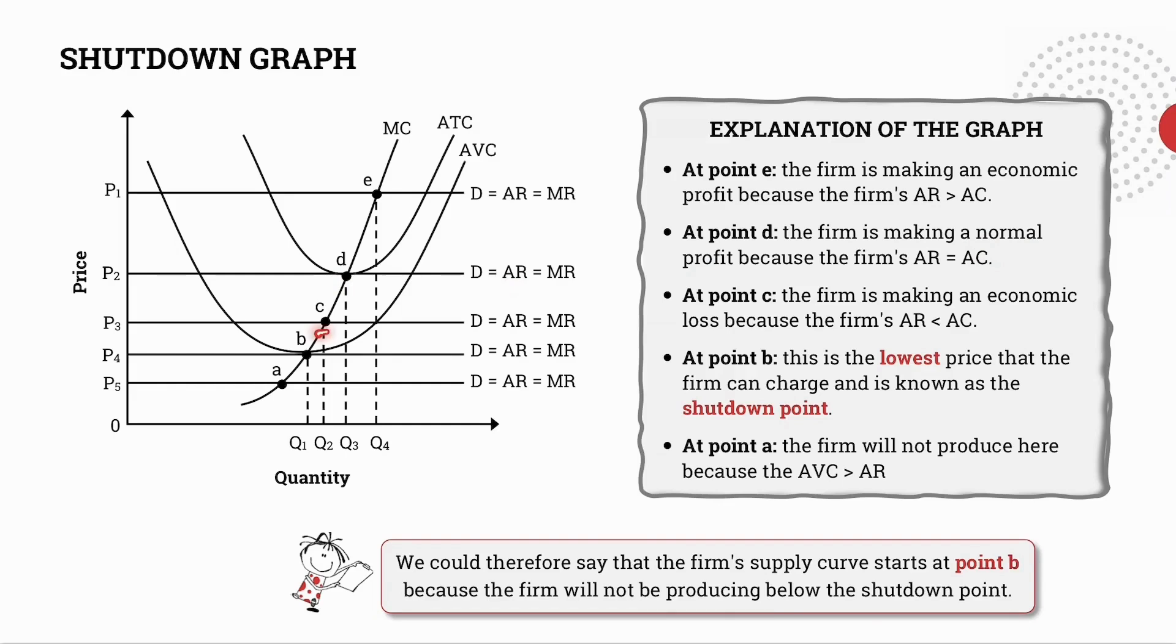At point C the firm is making an economic loss because the firm's average total costs exceed its average revenue.